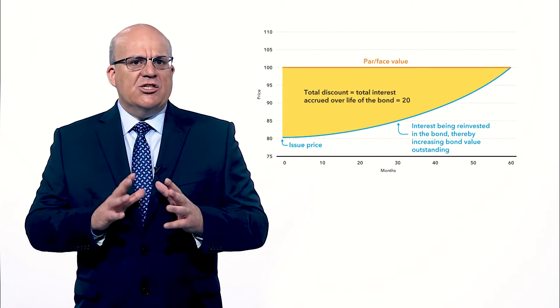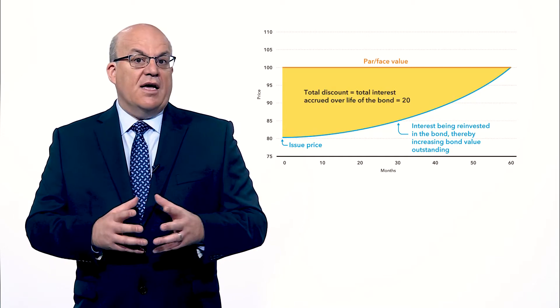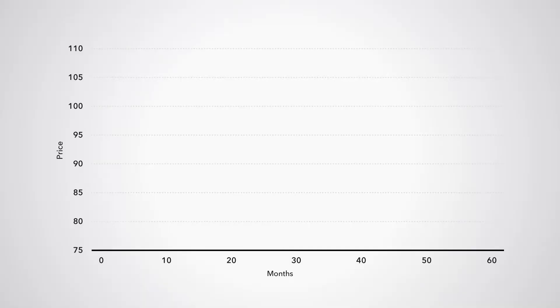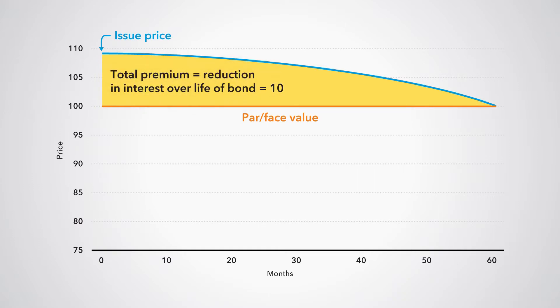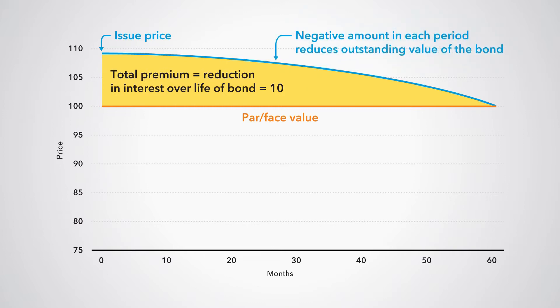It is not an other economic flow in the form of a revaluation. The premium of 10 would result in accruing a reduction in interest over the life of the bond. When issued at a premium, the negative amount accruing in each period reduces the value of the bond and also reduces interest expense.